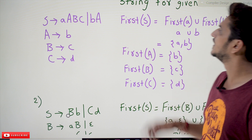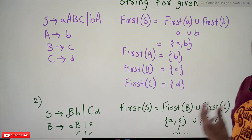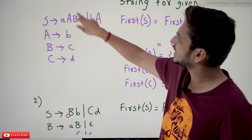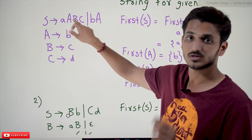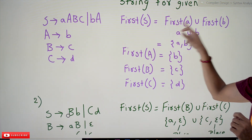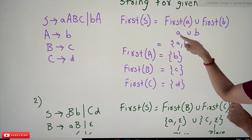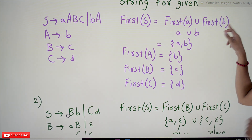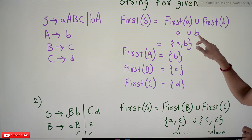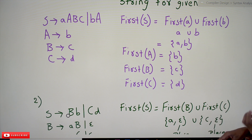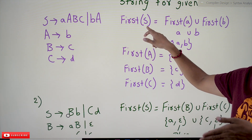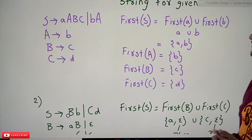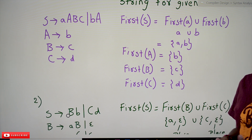Now we will calculate FIRST for all the non-terminals. FIRST(S): in the production S → aAbc, the first symbol is small 'a', so we write FIRST(a). In the production S → Ba, the first symbol is 'b', so we write union FIRST(b). Since 'a' and 'b' are terminal symbols, FIRST(S) = {a, b}.